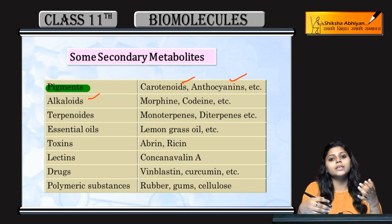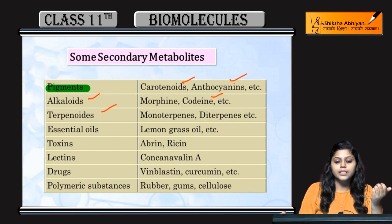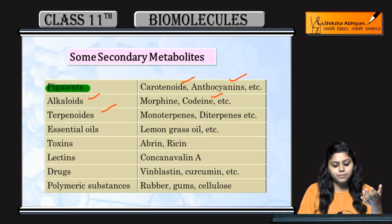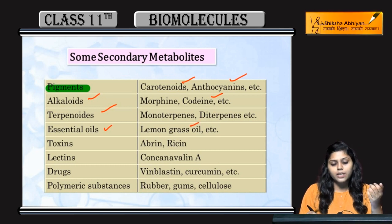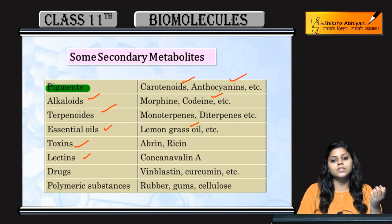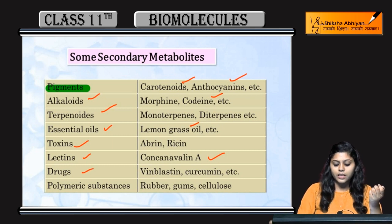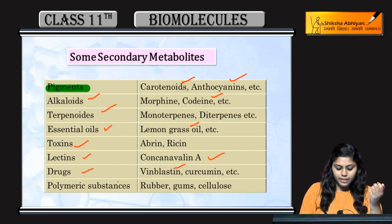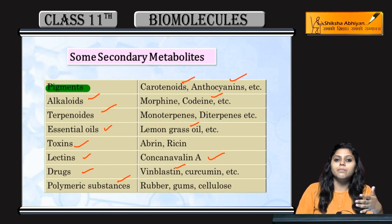Alkaloids such as morphine and codeine; terpenoids such as monoterpenes and diterpenes; essential oils including lemongrass oil and many other oils; toxins; drugs such as curcumin and vincristine; rubbers; gums; and cellulose — these are all examples of primary and secondary metabolites.